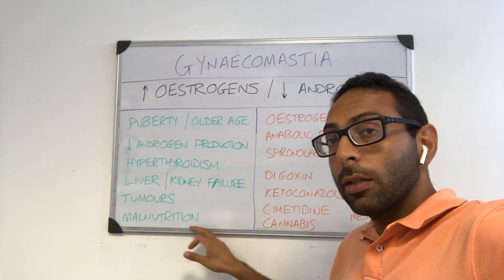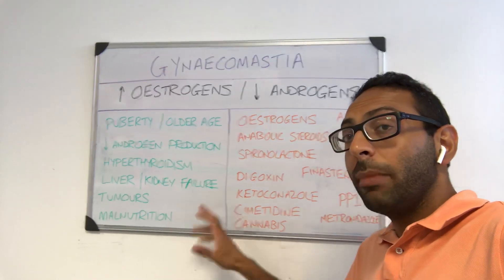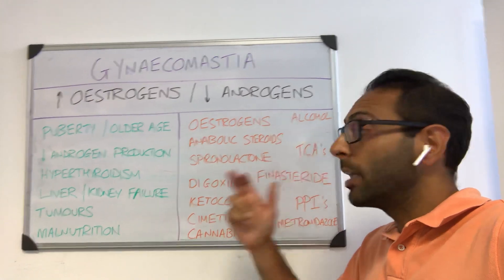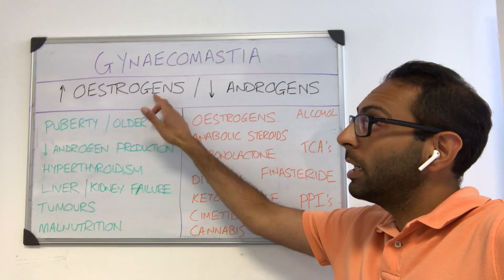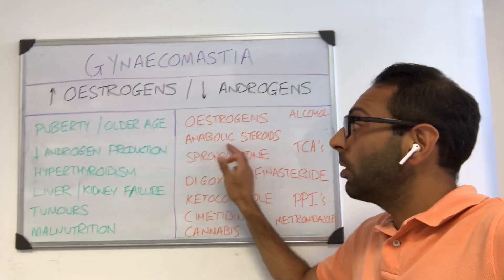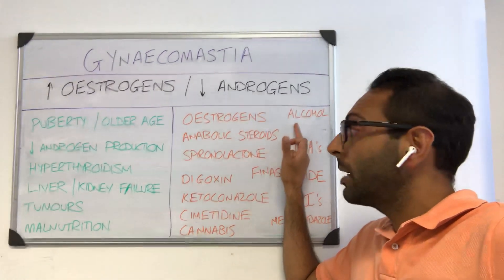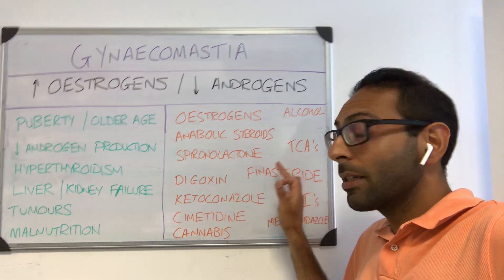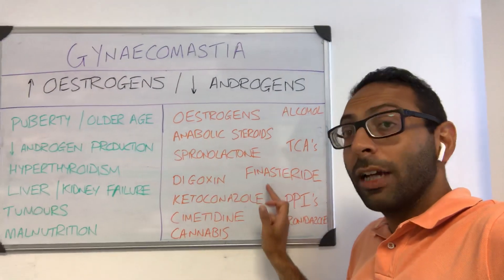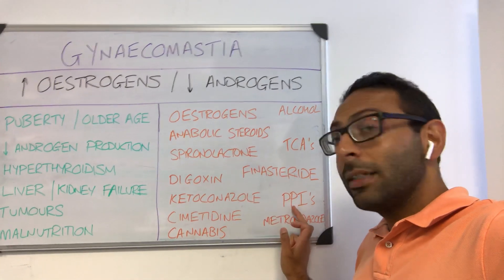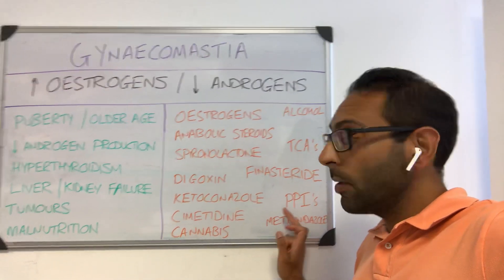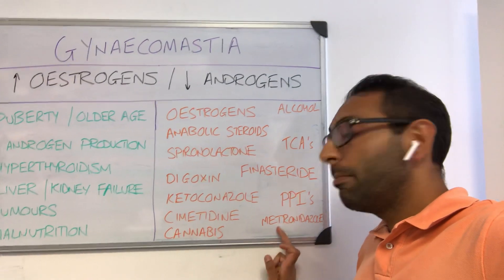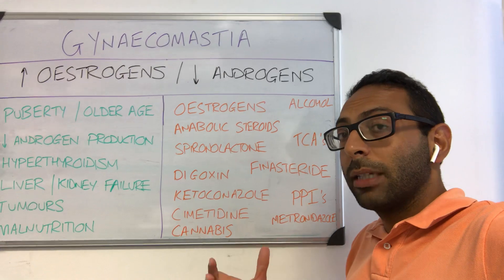Malnutrition is also worth remembering. In terms of medications, there are loads to remember. Key ones include: estrogens, anabolic steroids, alcohol, spironolactone — a classic to remember — tricyclic antidepressants, digoxin, finasteride, ketoconazole, PPIs such as omeprazole, cimetidine — another classic — cannabis or marijuana, metronidazole, and some other antibiotics.